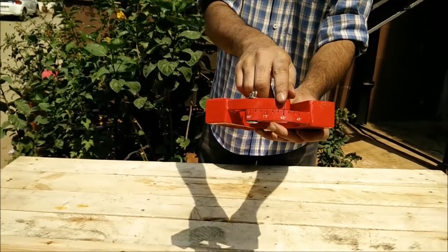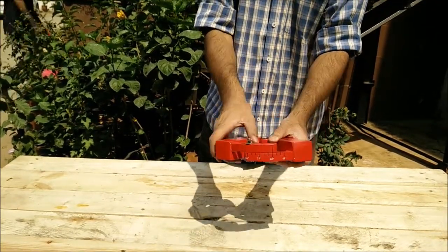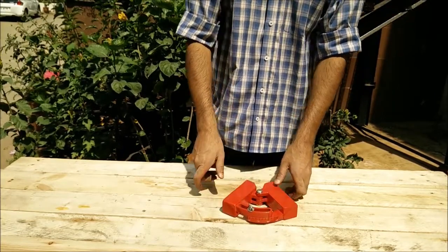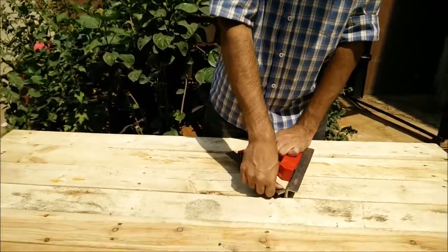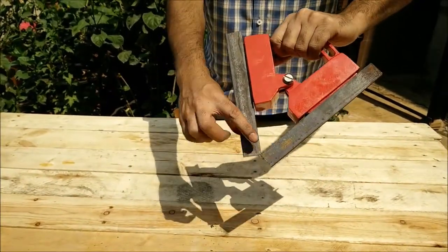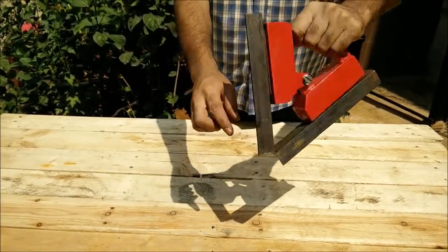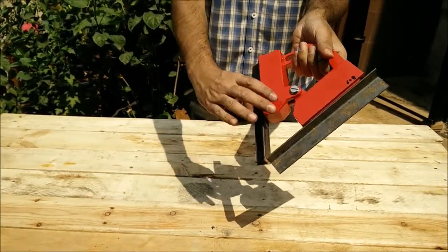For this video demonstration we have set the angle to 60 degrees. This is how you place the metal which needs to be welded. As you can see it has been placed at an angle of 60 degrees without any difficulty.